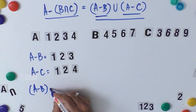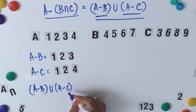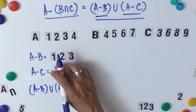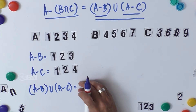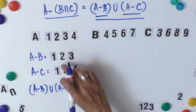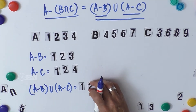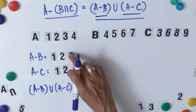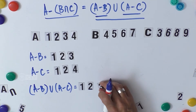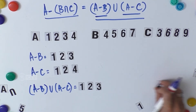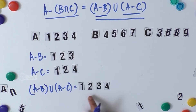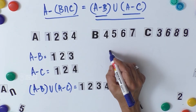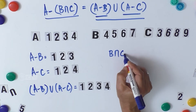Now we take A minus B union A minus C — all distinct objects from {1,2,3} and {1,2,4}. 1 and 2 are common so we take them once; 3 and 4 are not repeated. So A minus B union A minus C = {1, 2, 3, 4}.